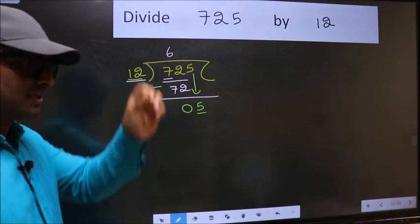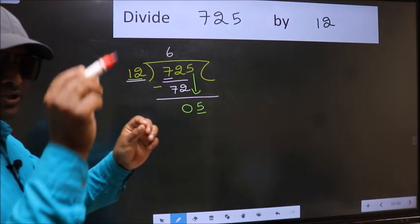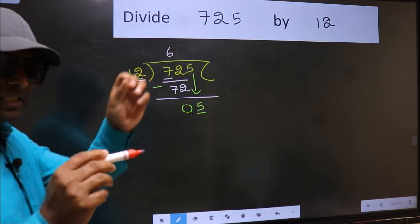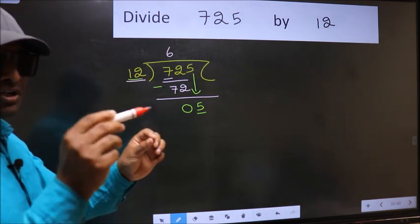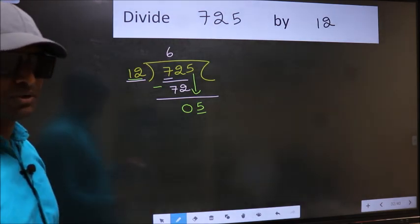I repeat. Bringing the number down and also putting dot and taking 0, both at the same step, you should not do.